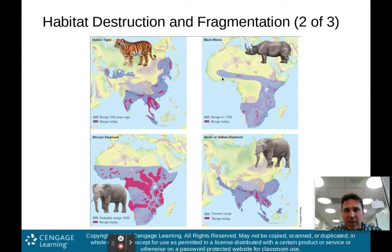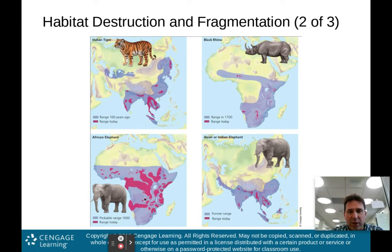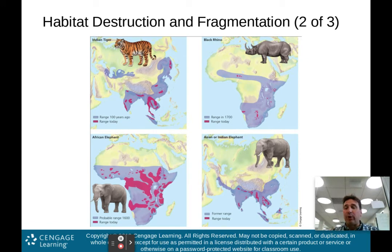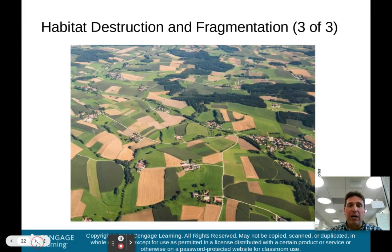Look at the black rhino — its range in the 1700s covered a vast area, but now you'll only find it in a couple of small pockets. The elephant's probable range in the 1600s was pretty much most of Africa, but now only in small red areas. The Asian or Indian elephant shows the same pattern — a large former range in blue, reduced to a fragmented range in red today. Just four examples of how destruction causes this fragmentation, and if you're an animal that needs a large range to survive, you obviously don't have that anymore.